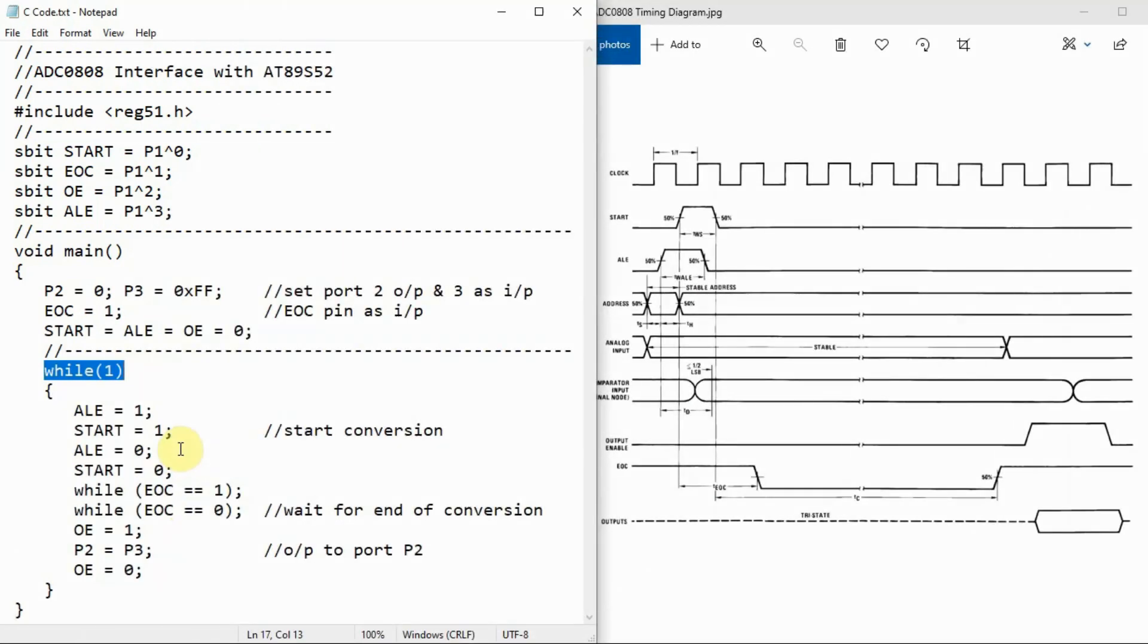Inside this indefinite while loop, the first thing we do is set the address line enable pulse to logic 1 as per the requirements of the timing diagram. Then we set the start pulse to 1 to initiate the start of conversion. And then we pull the pulses to logic 0.